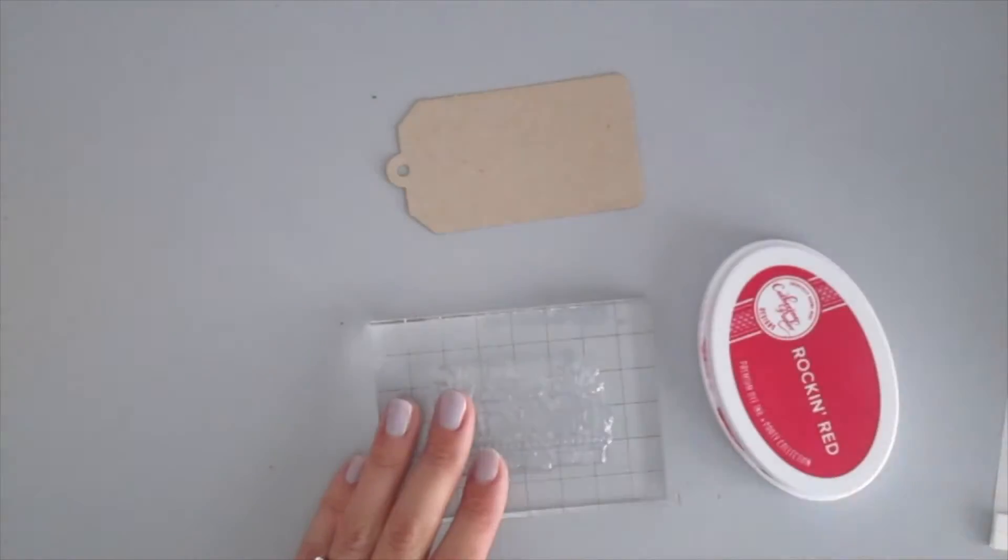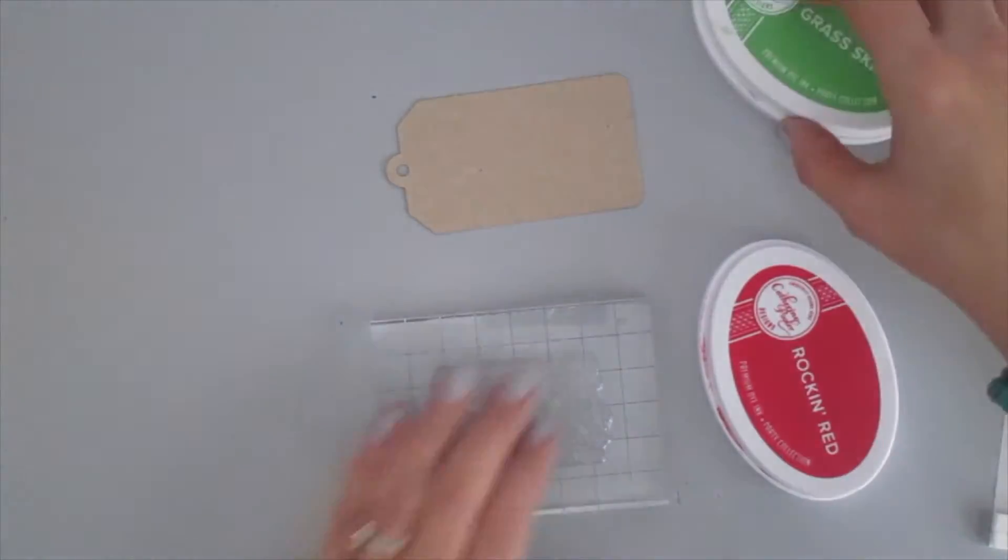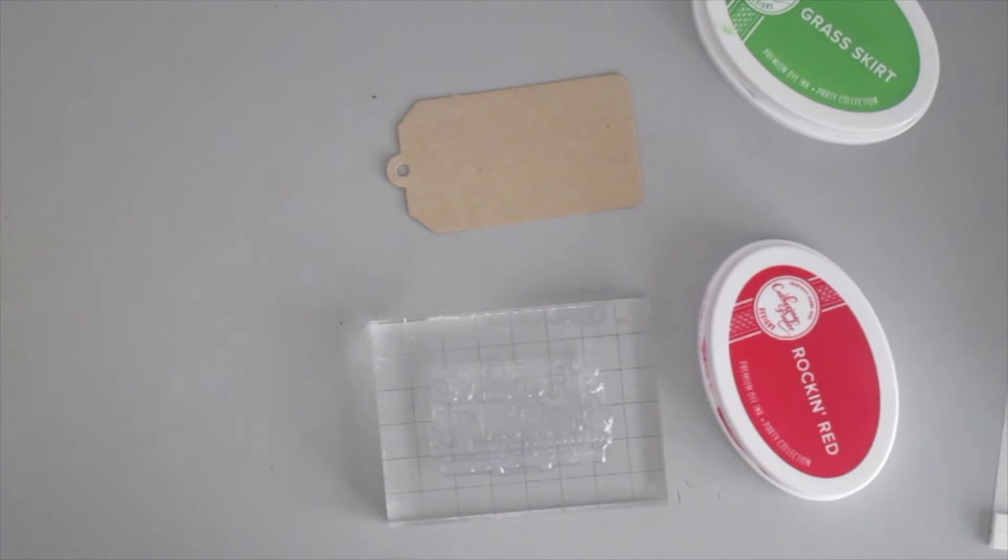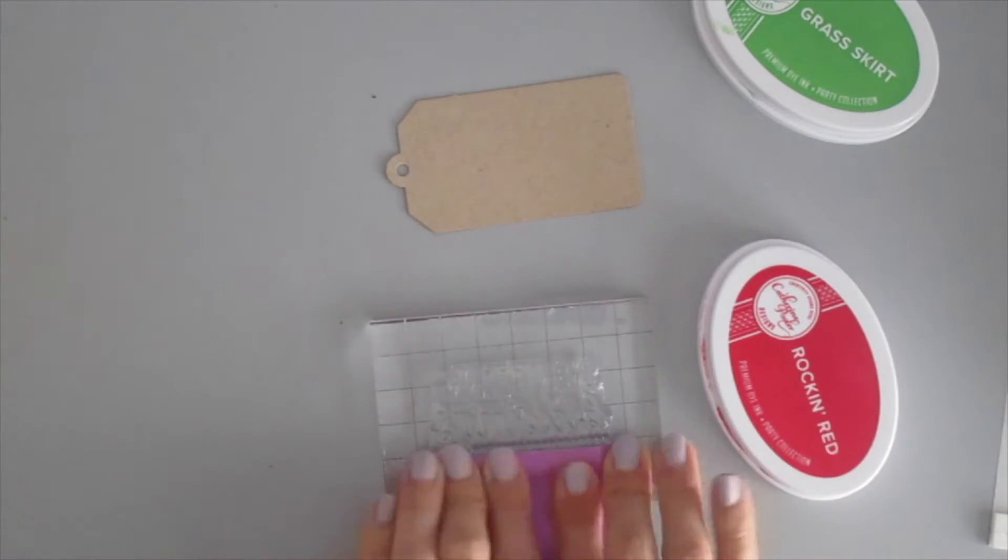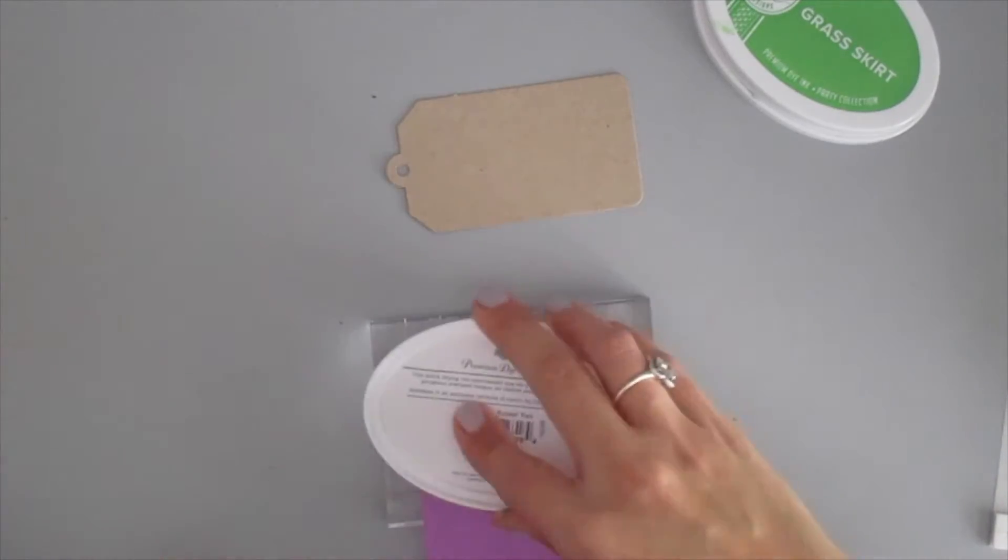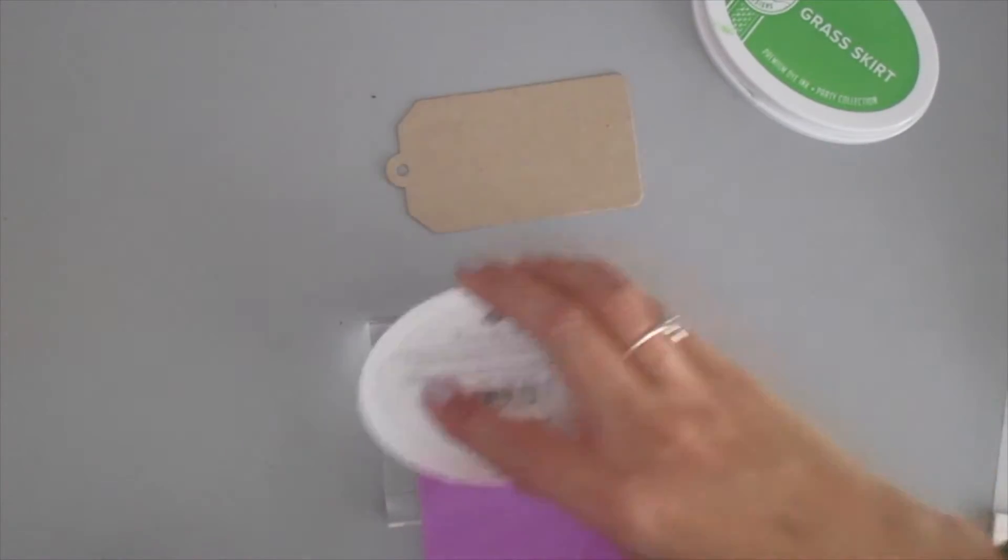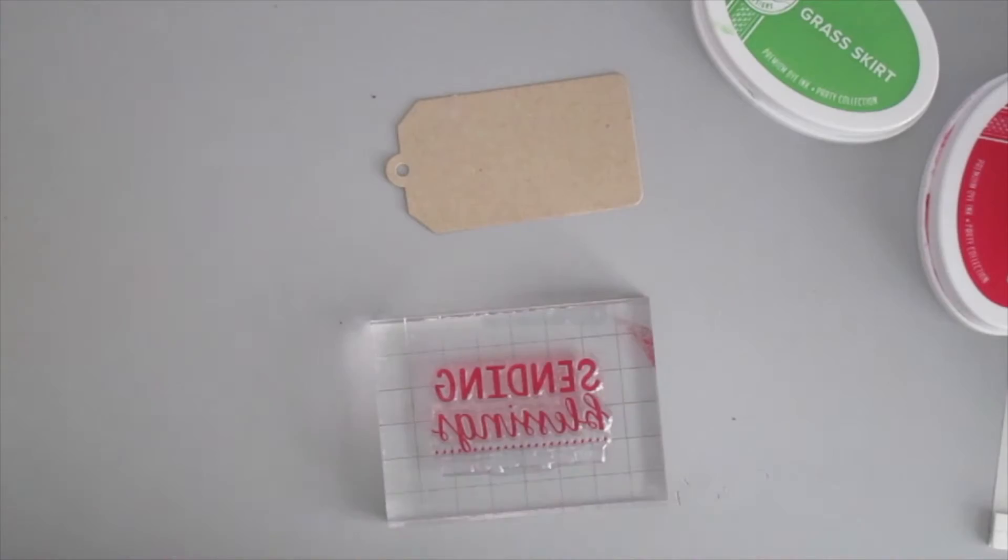So you saw the last tag I made, it was pretty simple, I just stamped it and then added some sequins. And then this is the final tag that I'm going to make and I'm also going to show you just a quick peek at some other projects that I made using just the few stamp sets that came out in this release.